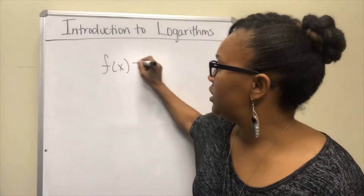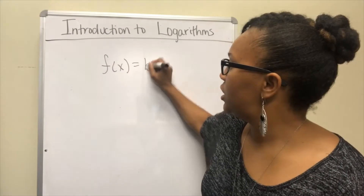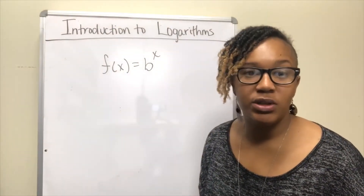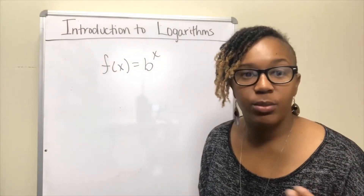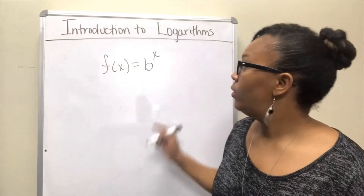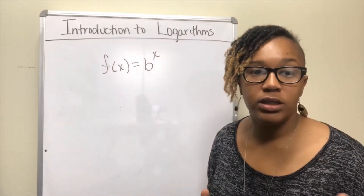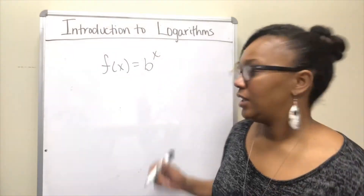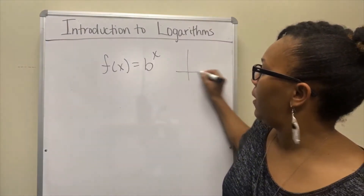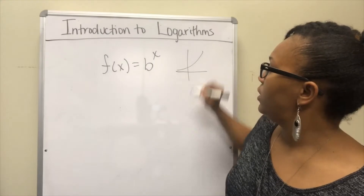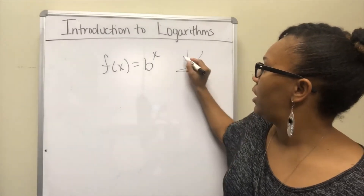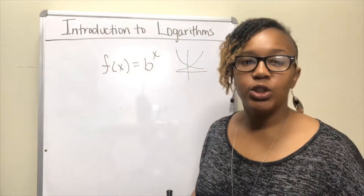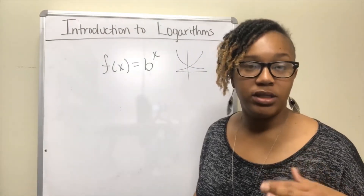An exponential function is a function of the form f of x equal b to the x. It's exponential because the variable is in the exponent. Recall that an exponential growth function either looks like that, or an exponential decay function either looks like that, and that depends on the base.